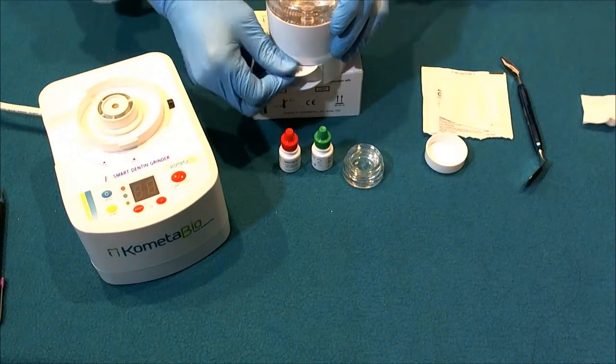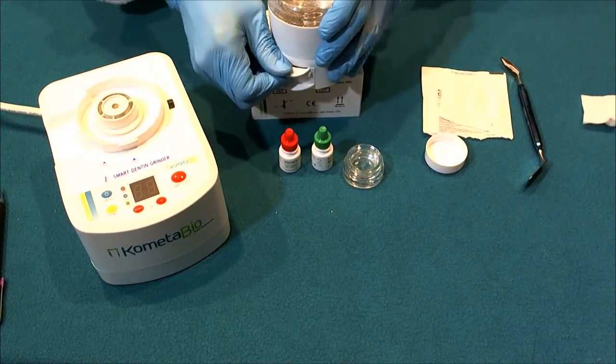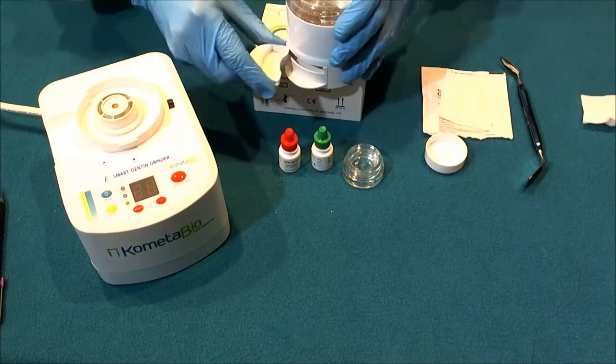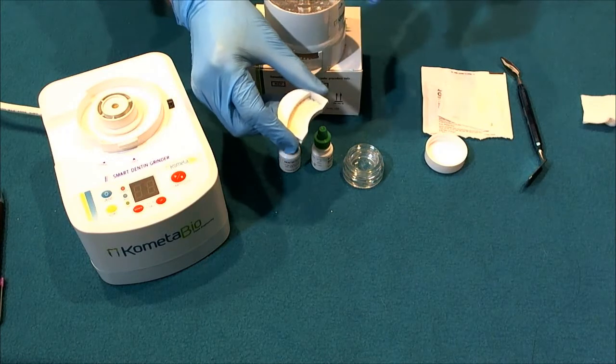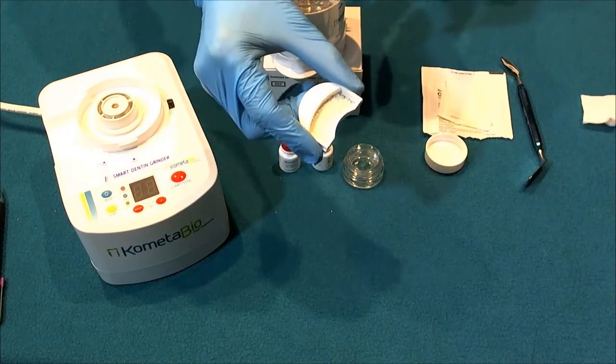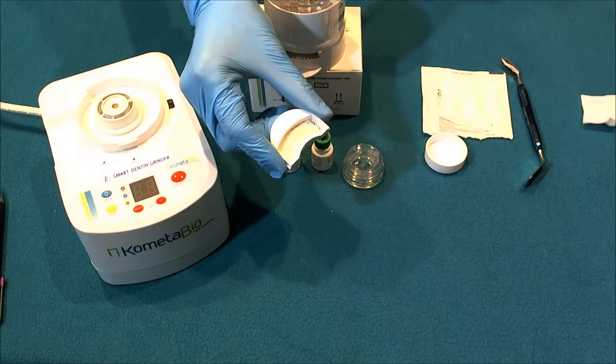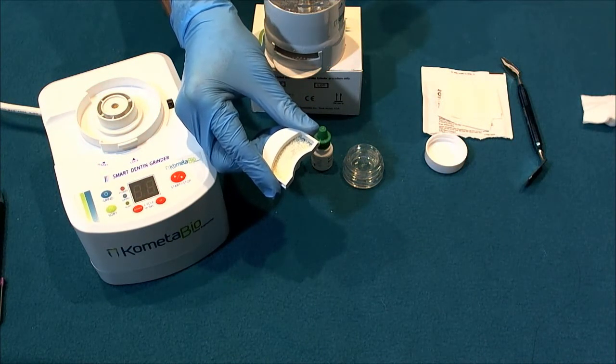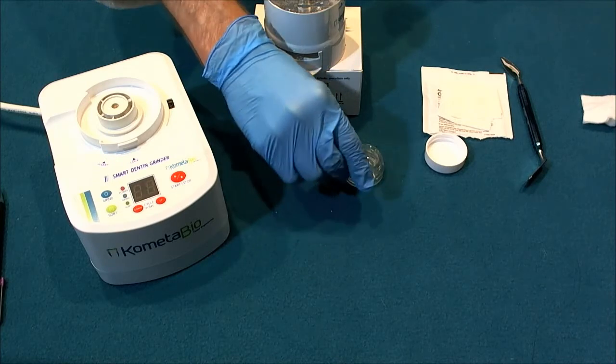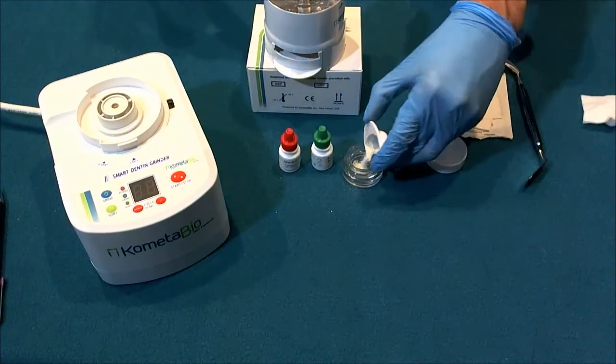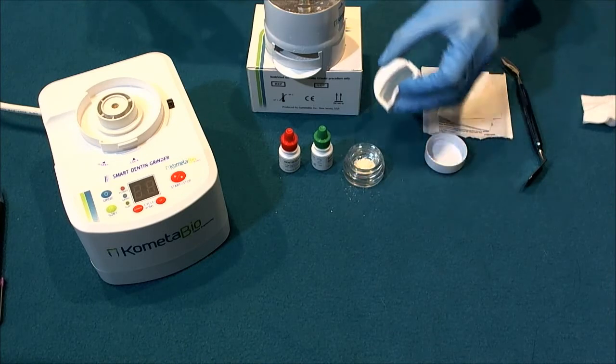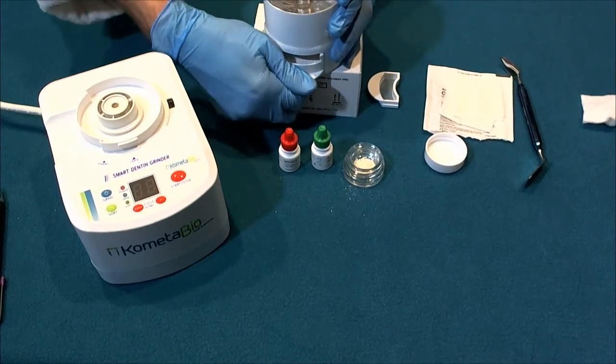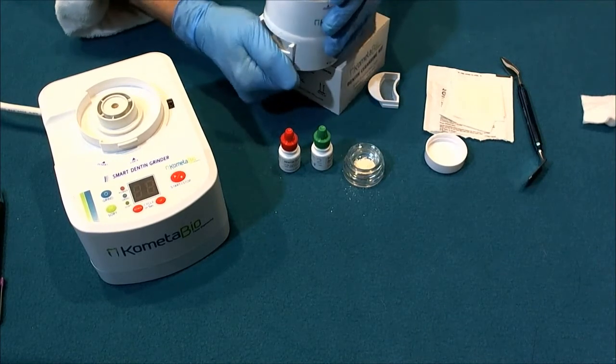So in the top tray here we have, this is from the molar, okay there's a lot of graft here from the smaller, so we have a graft with particular size of 300 microns to 1200 microns. We're going to move that to the mixing dish like so and we can always add to that the graft we have in the bottom door here.